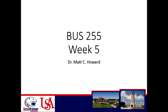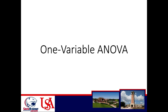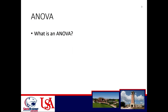Hello everyone, this is Dr. Matsey Howard again and welcome to Business 255. We are now in week five. This week we're going to be covering one variable and two variable ANOVA. So far in this class we've covered chi-square, one sample t-test, and two sample t-test. So now we're moving on to one variable ANOVA, which is one of the last analyses that compares differences between groups, before moving on to analyses that look at the relationship between variables. Let's go ahead and get started.